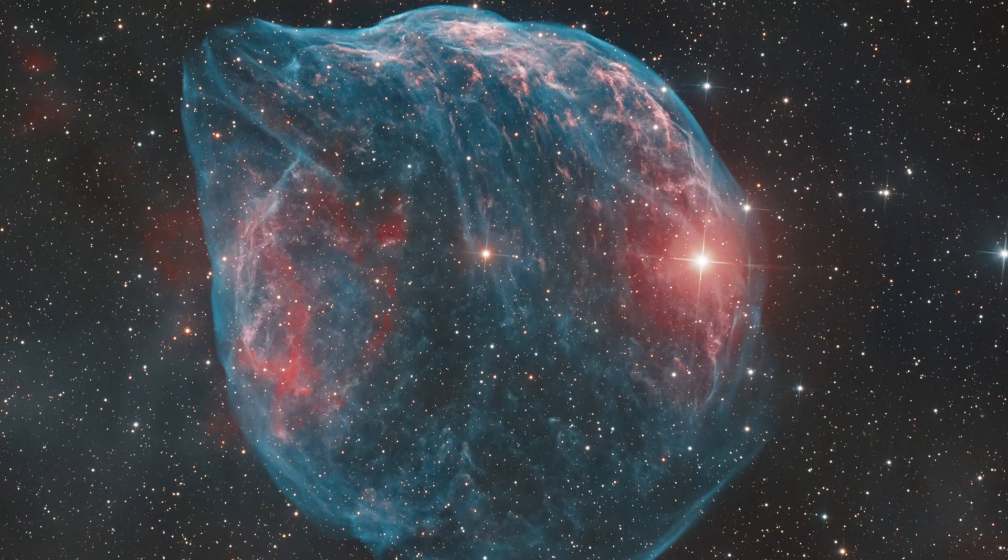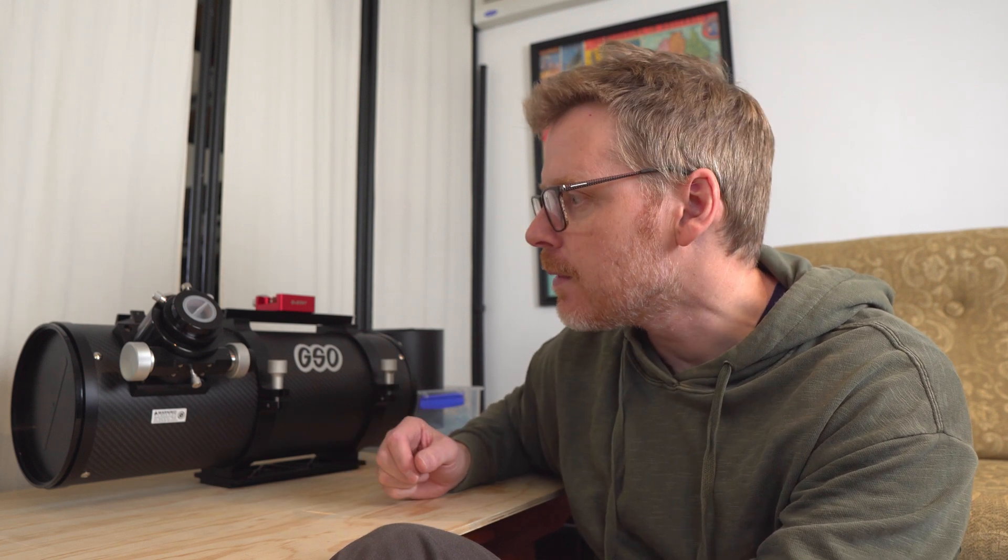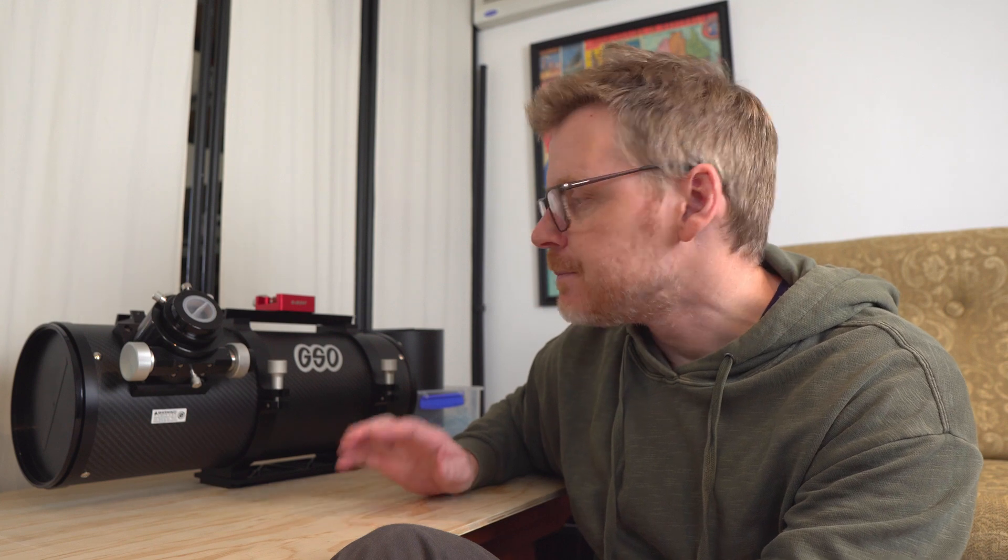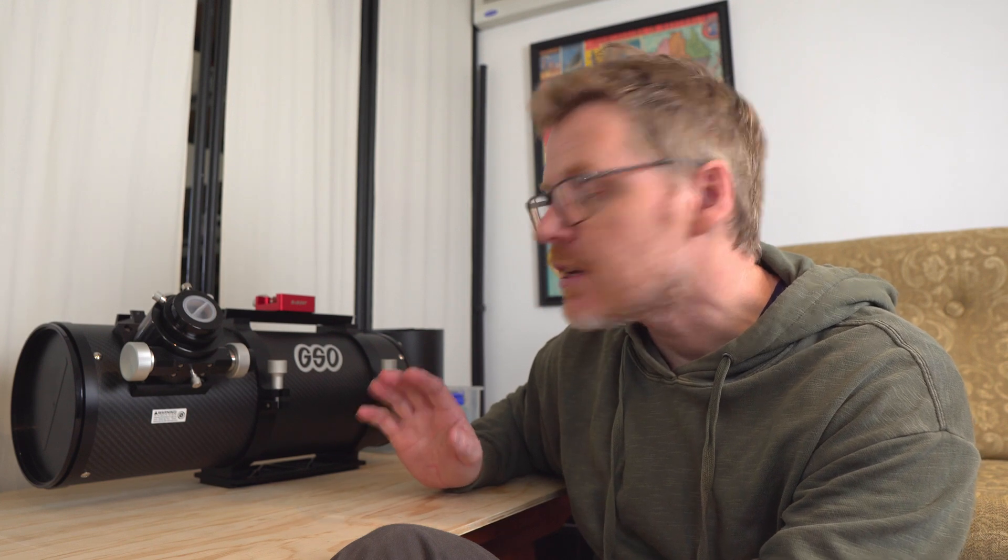The point being, the reason I ended up getting rid of that telescope is because whilst it was good when it was dialed in, it was tricky to get dialed in. And also, I think because I was new to the hobby then, you tend to not have that much patience. You just want to get out and get imaging as well. So between the fact that it seemed to go out of collimation quite easily and I was just wanting to get imaging, I decided to sell that telescope.